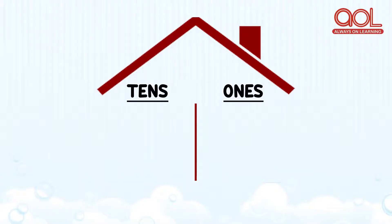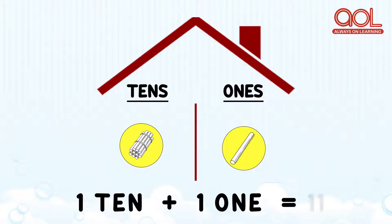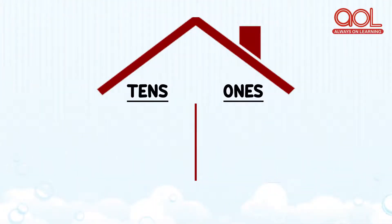Now, here you can see in the tens house there is one bundle of ten, and in the ones house we have one one. One ten and one one will make number eleven.